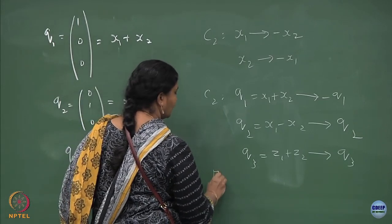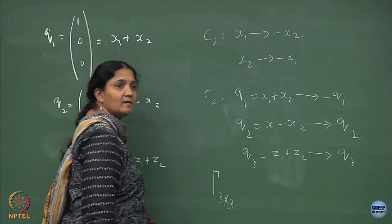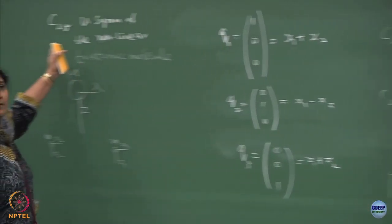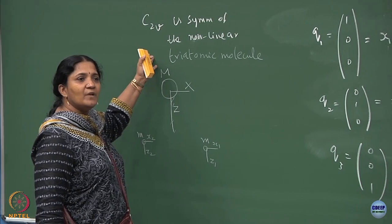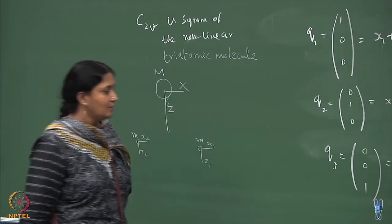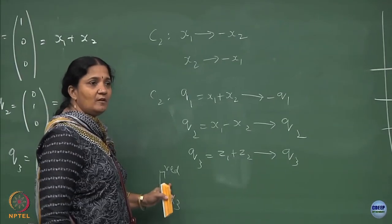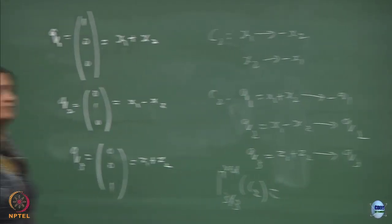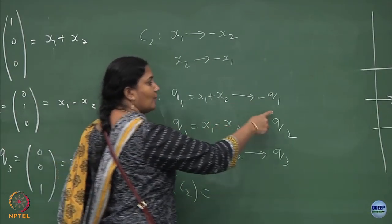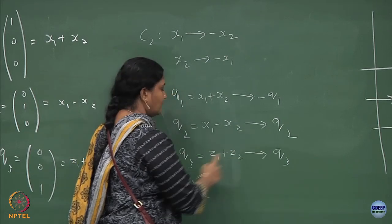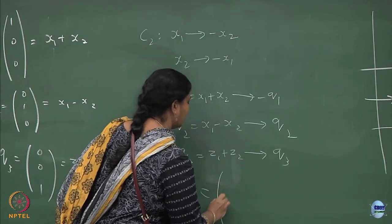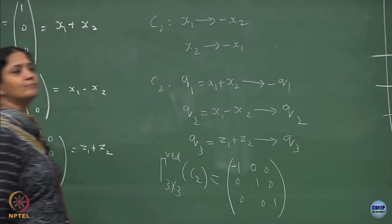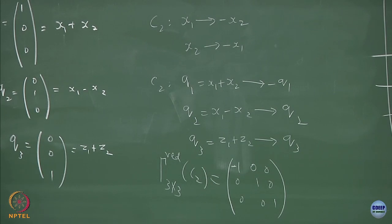The corresponding matrix representation, which is a 3 cross 3 matrix, it better be reducible because C2v is an abelian group with each irrep being one dimensional - you cannot get a 3 cross 3 matrix. The 3 cross 3 has to be reducible for the C2 element in this basis q1, q2, q3. When it acts on q1 it should go to minus q1, q2 should remain, q3 should remain. The matrix is minus 1, 0, 0; 0, 1, 0; 0, 0, 1.